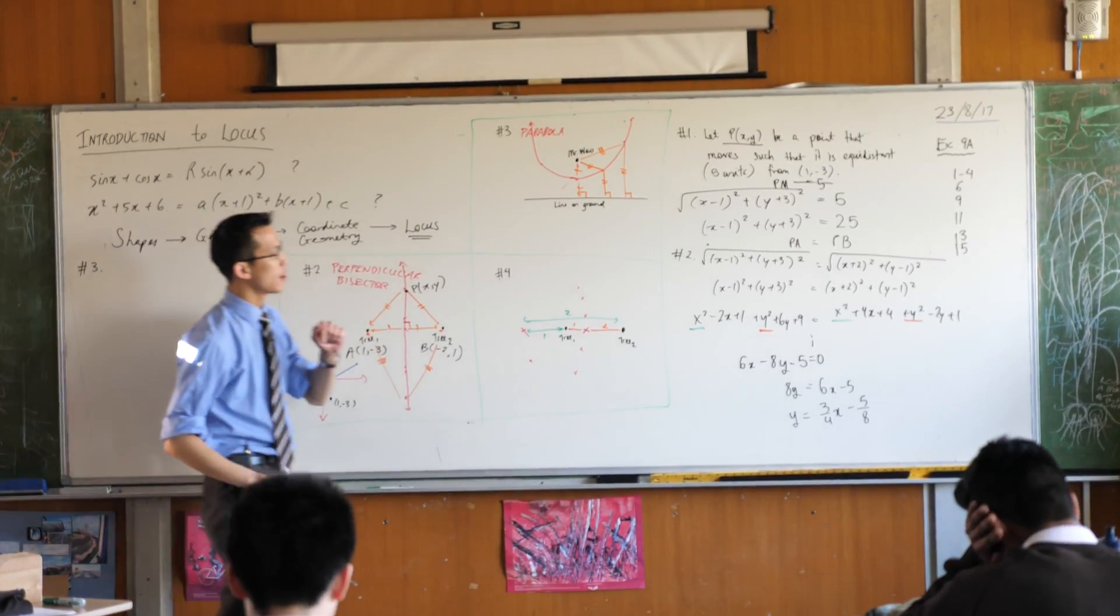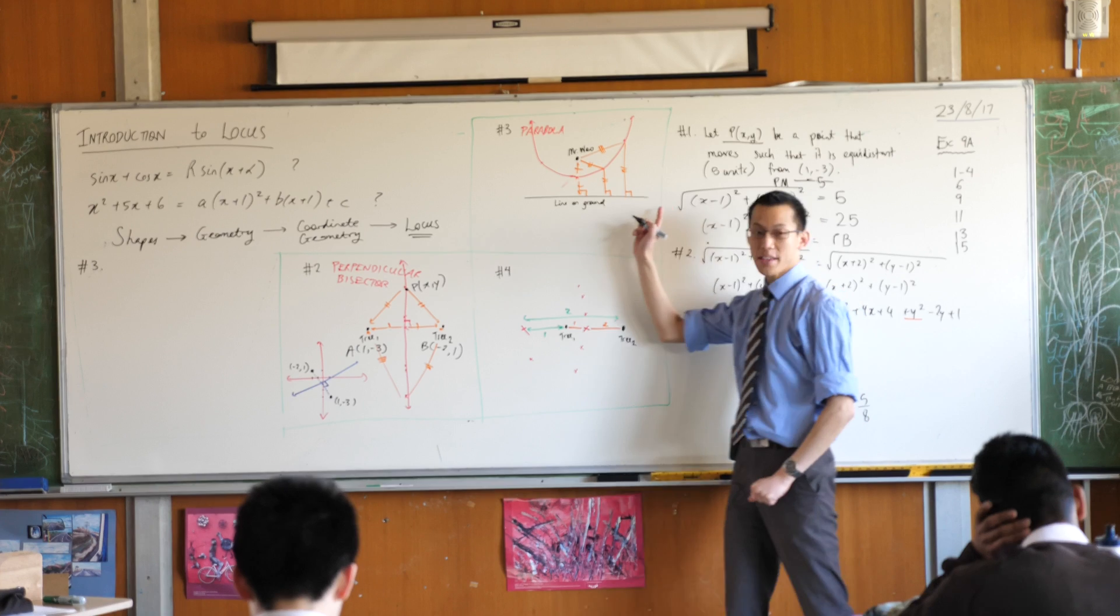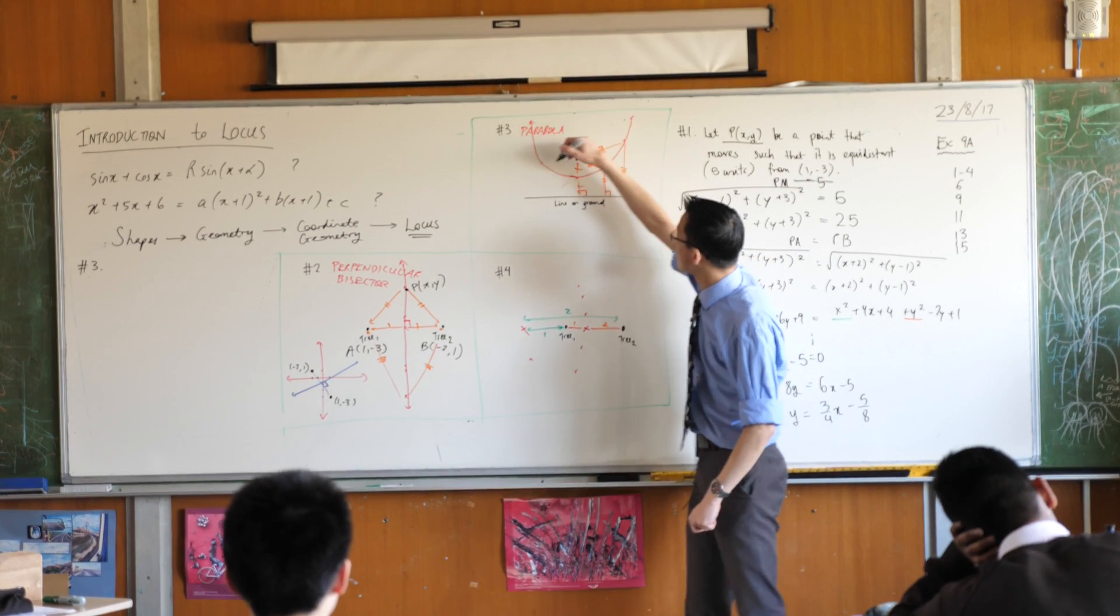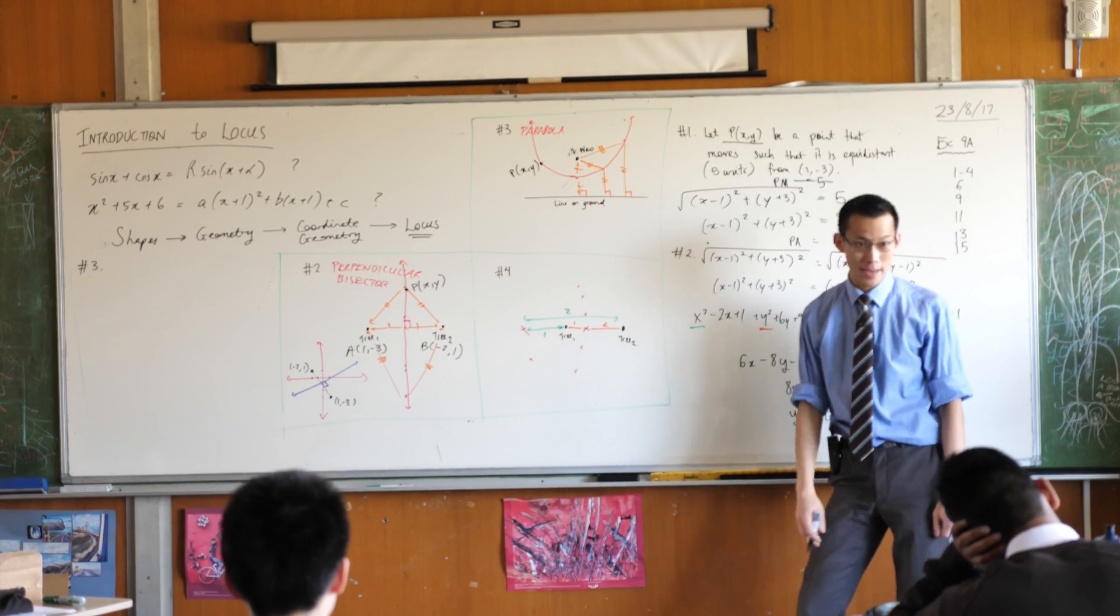Do you remember what the rule was? We've got a fixed point and a fixed line, and then you've got some point that sort of hovers around and it's the same distance from each.